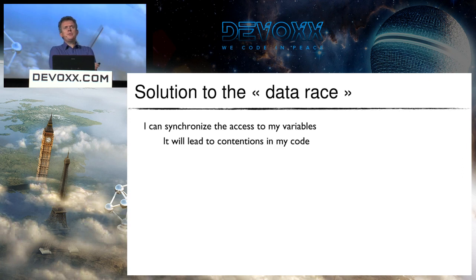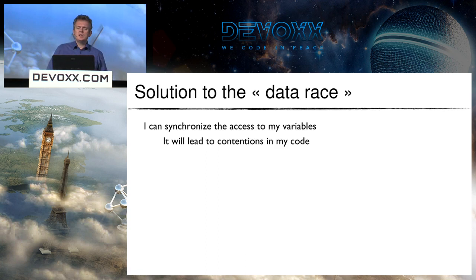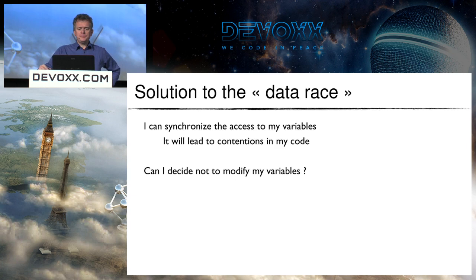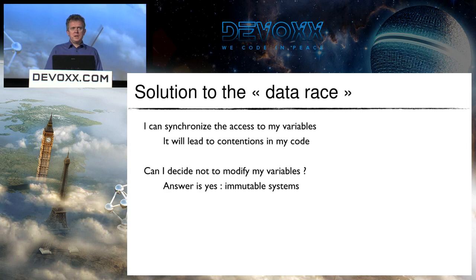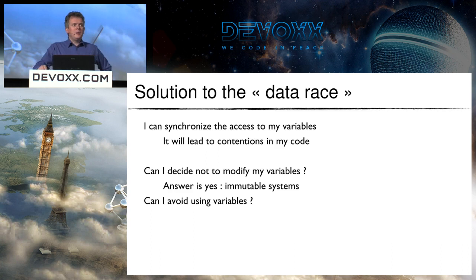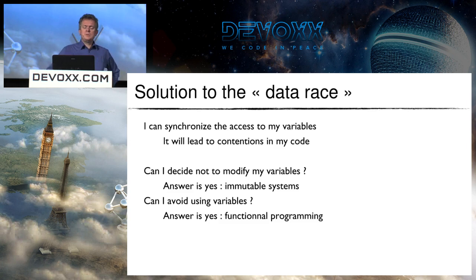So here is the first solution to the data race: synchronize access to variables, especially writes. The drawback is contentions in my code, which can hurt performance very badly. People have tried other solutions — maybe decide not to modify any variables, leading to immutable systems. Or ask: do I have to use variables at all? What if I decide not to use any variables? The answer is yes, it's possible — that's the basis of functional programming. Functional programming is not supposed to use any variables.